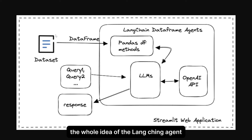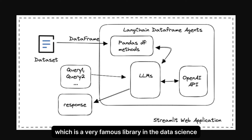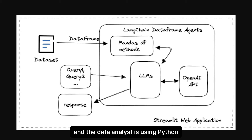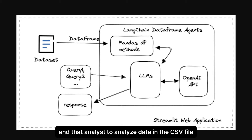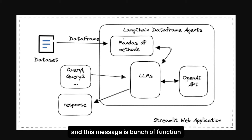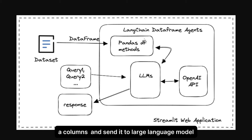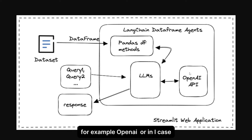The whole idea of the LangChain agent is that it takes the dataset and combines it with a library called Pandas, which is a very famous library in data science and data analysis. Using Python, it helps scientists and analysts to analyze data in a CSV file, extract information, and do a lot of analysis on it. LangChain combines these functions, takes all the dataset columns, and sends them to a large language model.